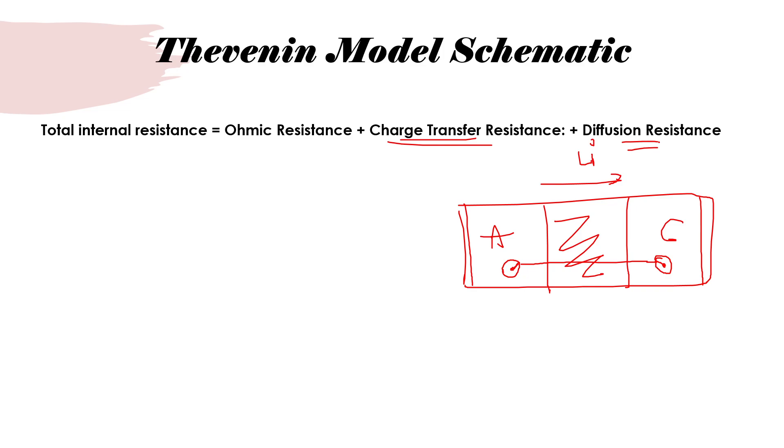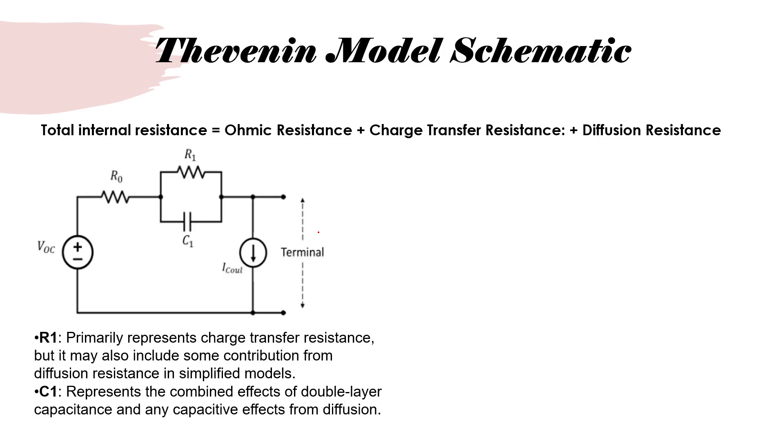The last two processes, as you can intuitively think, would be a slower process compared to ohmic resistance. This is mostly due to the electrical resistances, which is a sudden drop and spontaneous. So you have three different components. To capture these three components, let's consider a one RC branch. Ohmic resistance would be captured by R0, charge transfer resistance and diffusional resistance would be captured by R1, whereas the double layer capacitance and diffusional capacitive effects would be captured by C1. Here R1 and C1 together represent charge transfer and diffusional resistance or capacitance.